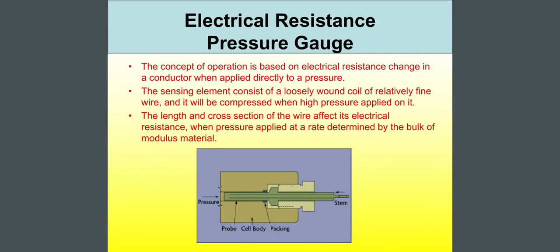Next topic, electrical resistance pressure gauge. The concept of operation is based on electrical resistance change in a conductor when applied stress due to a pressure. The sensing element consists of a loosely wound coil of relatively fine wire. And it will be compressed when high pressure applied on it. The length and cross section of the wire affect its electrical resistance. When pressure applied at rate determined by the bulk of modulus material. Look at the figure. There is the pressure and a stem. And in the middle there is the probe, cell body and packing.